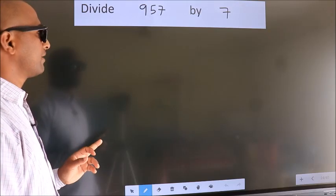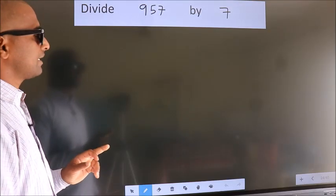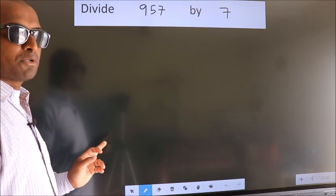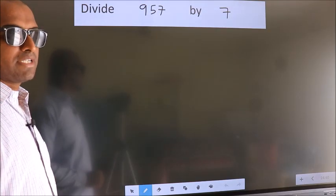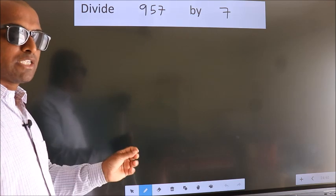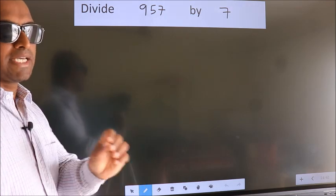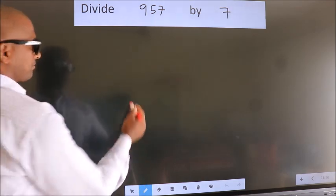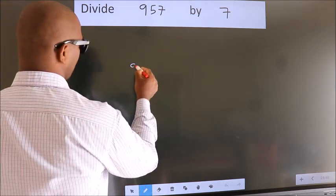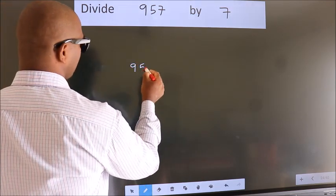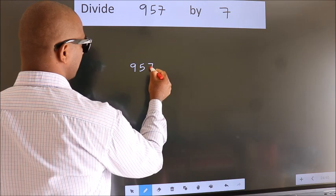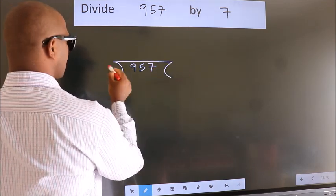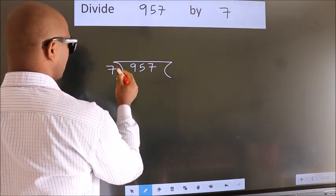Divide 957 by 7. To do this division, we should frame it in this way: 957 here, 7 here.